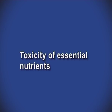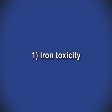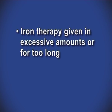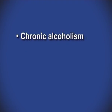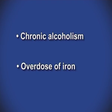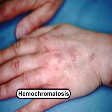Toxicity of essential nutrients. First, iron toxicity: iron may accumulate in the body because of iron therapy given in excessive amounts or for too long, repeated blood transfusions, chronic alcoholism, or overdose of iron. Iron overload can also result from an inherited iron overload disease called hemochromatosis — a potentially fatal but easily treatable genetic disorder in which too much iron is absorbed.